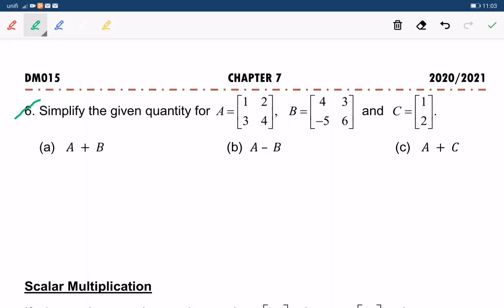Simplify the given quantity for matrix A: 1, 2, 3, 4; matrix B: 4, 3, negative 5, 6; and matrix C: 1, 2. Question A: A plus B.